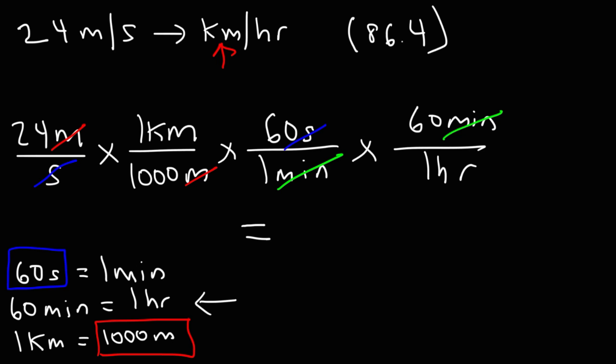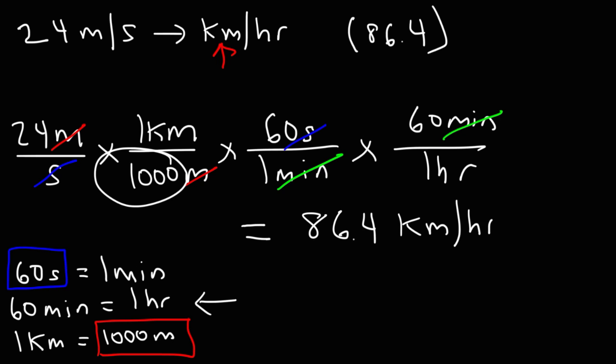Now let's do the math. Take 24 and divide it by 1,000, then multiply by 60, and then multiply by 60 again. This gives us 86.4 kilometers per hour.